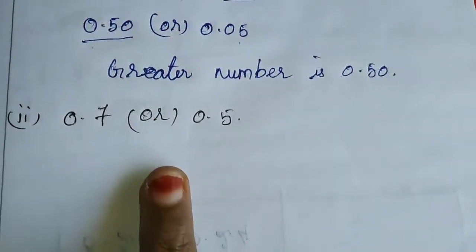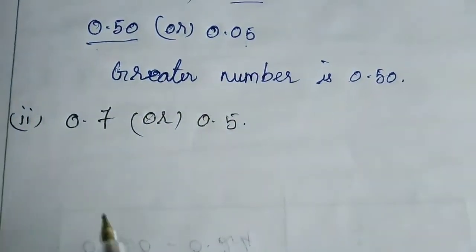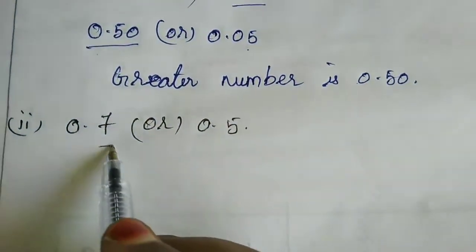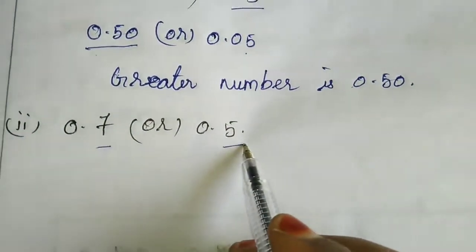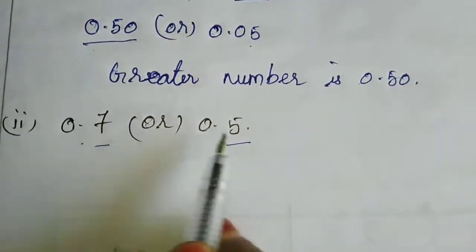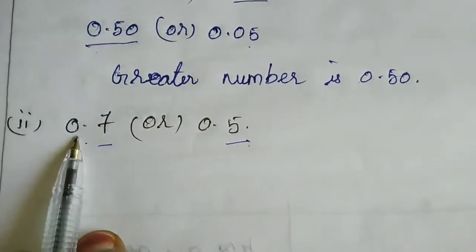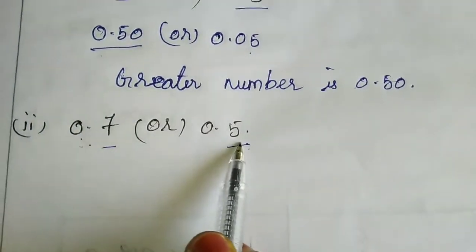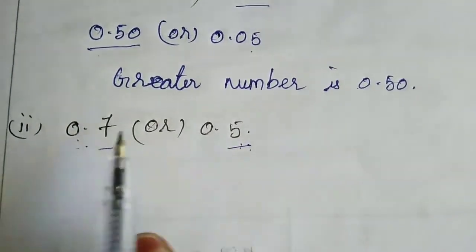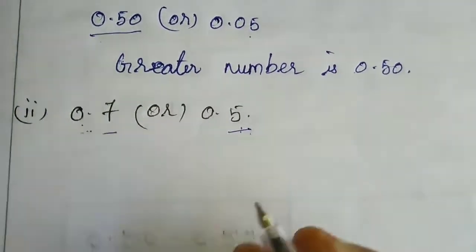Now I am going to the second sum. See here — here one digit, here also one digit. So you have to compare directly: 0.7 or 0.5 — which is greater? 0.7 is greater.